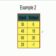Here's another example. Here, we need to find the rule. So 36 to 6, 48 to 18, 66 to 36, and 29 to negative 1.